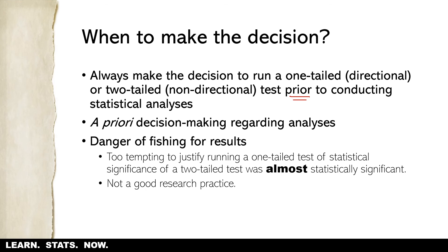When you know something will turn out after you've already run an analysis, that's not the same as deciding before running it — and that's not a good research practice. We want to specify whether we're running a one-tailed or two-tailed test before actually running the statistical test. You would choose a directional test when you have good reason to believe that an outcome on one side of the sampling distribution is super unlikely — either because it doesn't make sense or because a strong existing literature base tells you it won't happen.